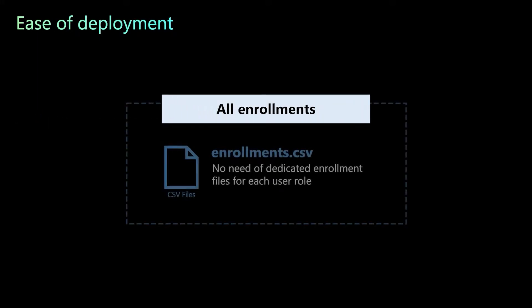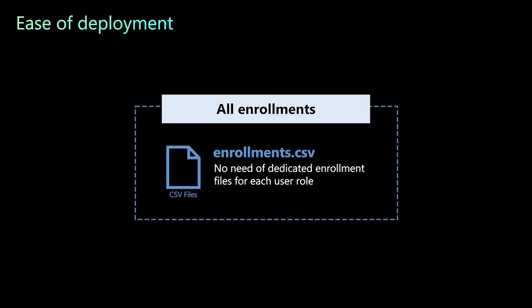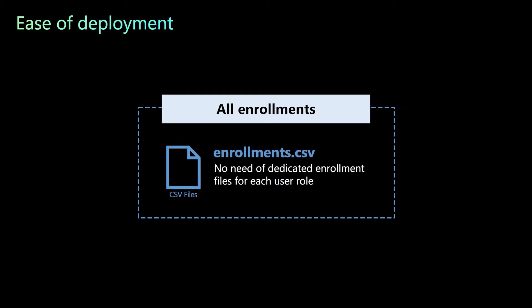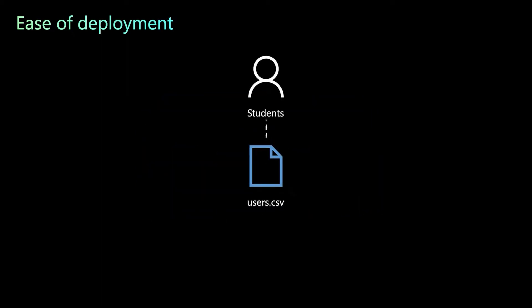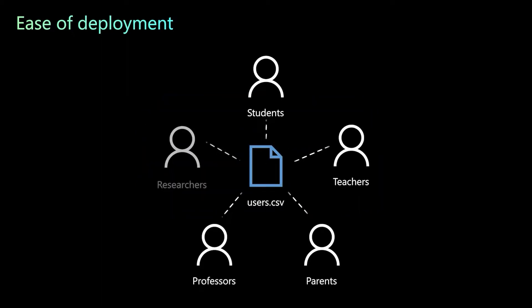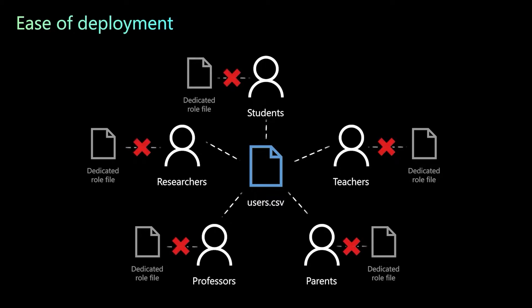All enrollments now go into the enrollments.csv file without the need for dedicated enrollment files for each user role. Similarly, all user roles — like students, teachers, parents, professors, and researchers — all sync through a single users.csv file, eliminating the need to sync dedicated files split by role.